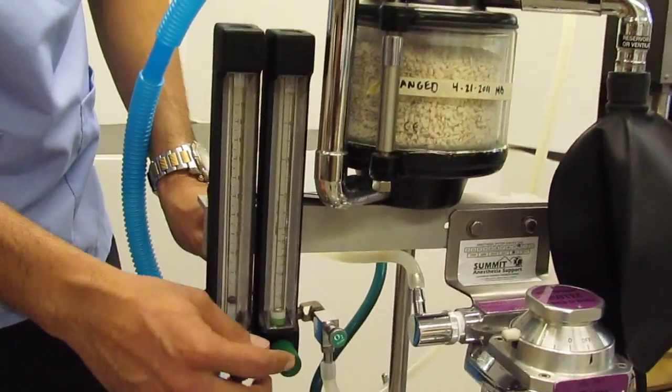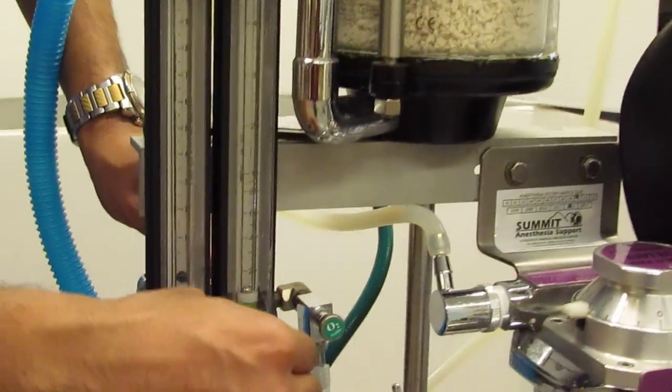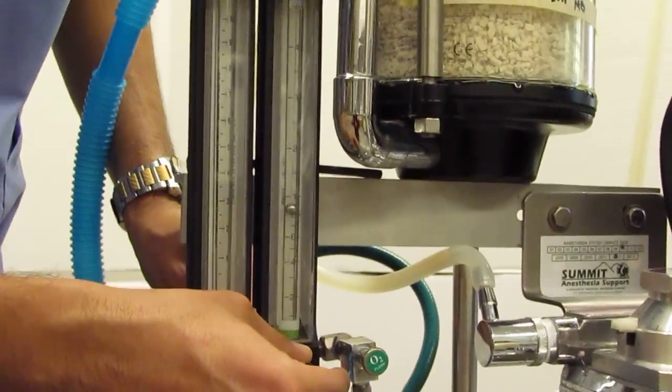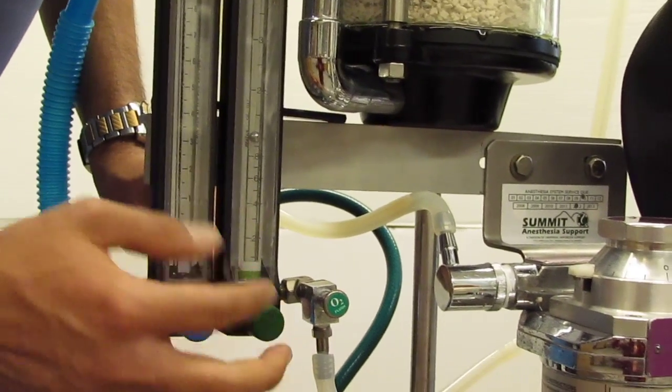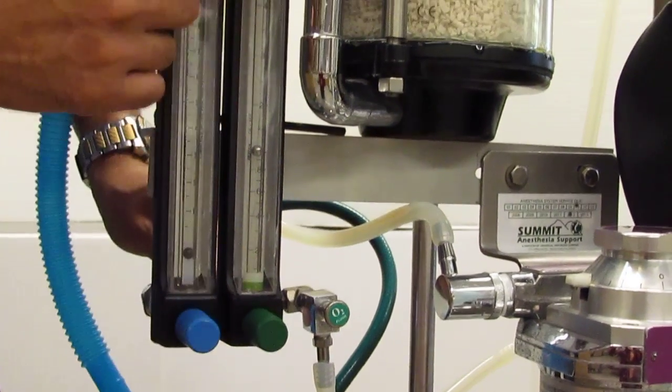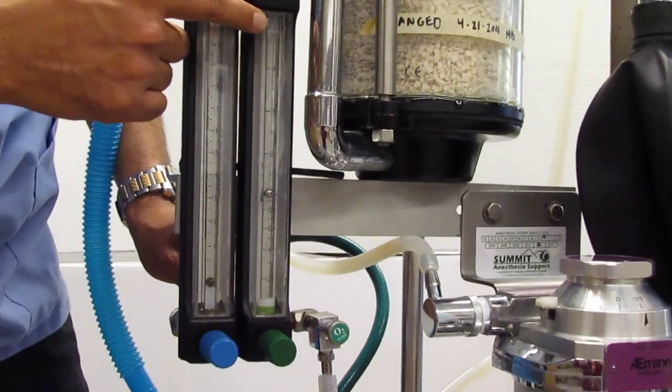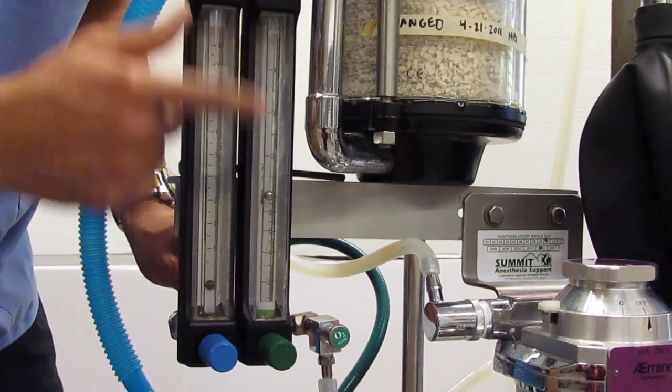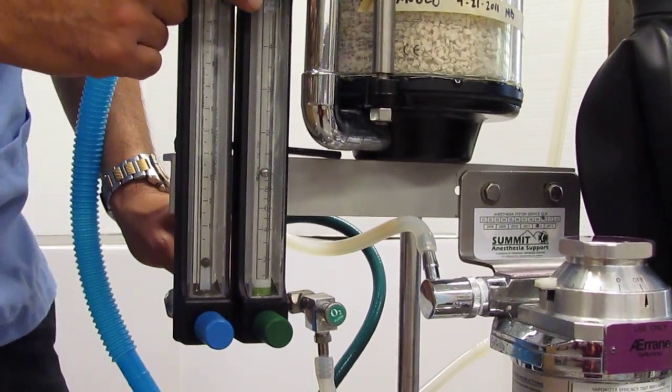A couple things can happen at our flow meter. One, we can set the flow of oxygen to our vaporizer in this flow meter anywhere from zero to about four and a half, okay? This one is set to about zero to four and a half liters per minute.